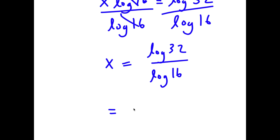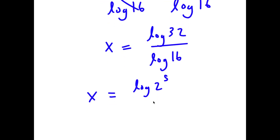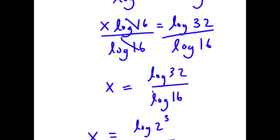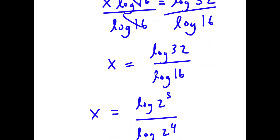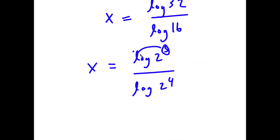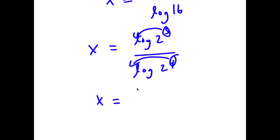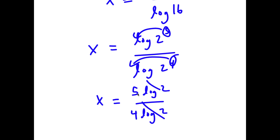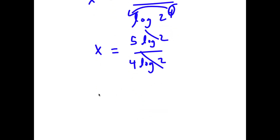Log 32 is the same thing as log 2 to the power of 5, and log 16 is the same thing as log 2 to the power of 4. Since I can move exponents to the front, I have 5 times log 2 over 4 times log 2. The log 2s cancel out, so I'm left with x equals 5 over 4.